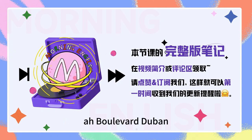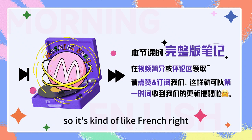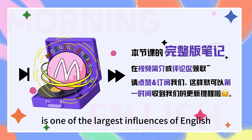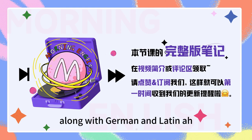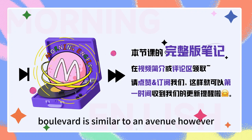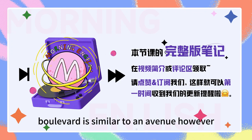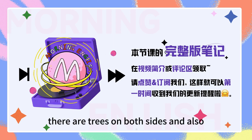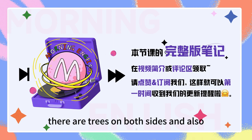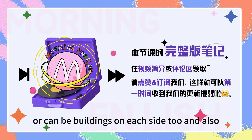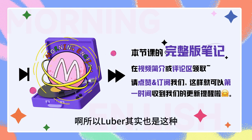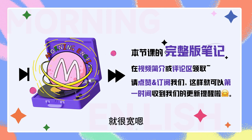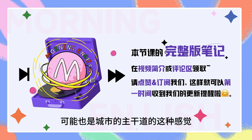还有一个中文当中会经常说的就是临荫大道，对吧？So that could be boulevard. Yes, so... It's kind of French, right? Yeah, a lot of these words do come from French. Actually, French is one of the largest influencers of English, along with German and Latin. So that's why you see so many French words in English. Boulevard is similar to an avenue. However, it can sometimes be even larger than an avenue. There are usually trees on both sides and buildings on each side too, and also multiple lanes. 所以boulevard就是临荫大道的感觉，两边有很多树，中间可能还会有花坛，很宽，是城市主干道的感觉。